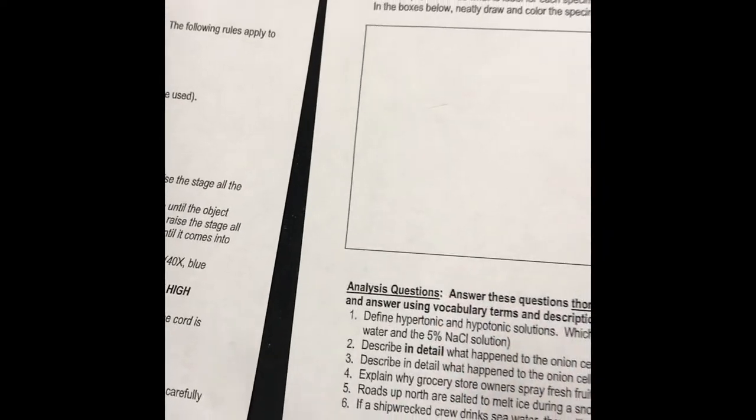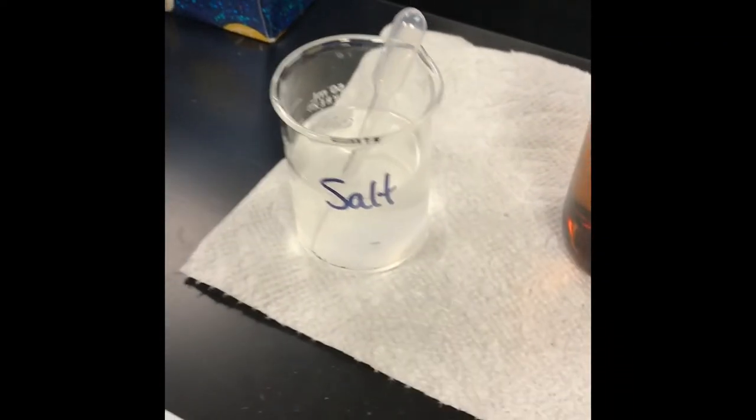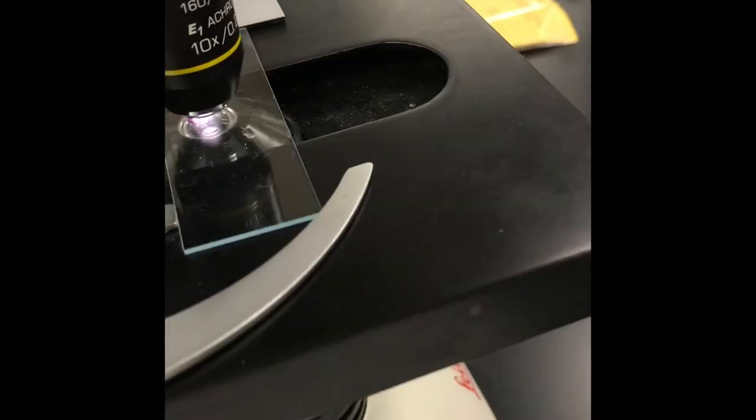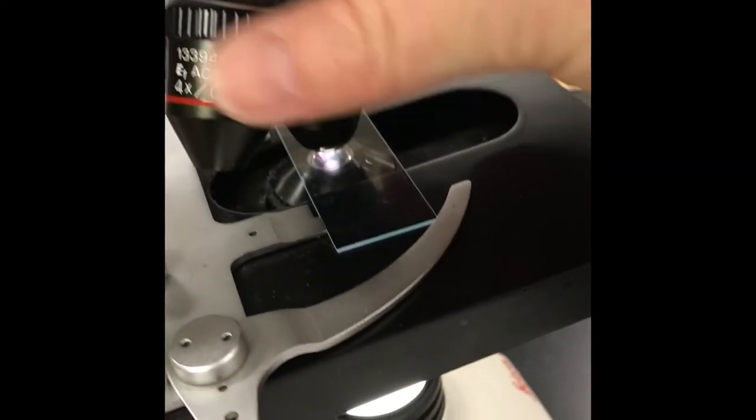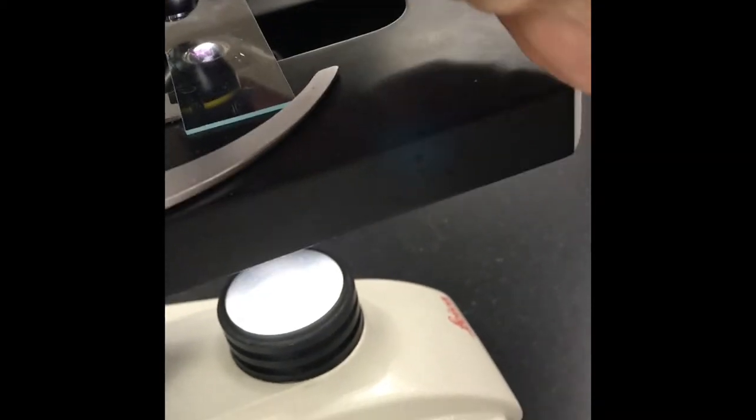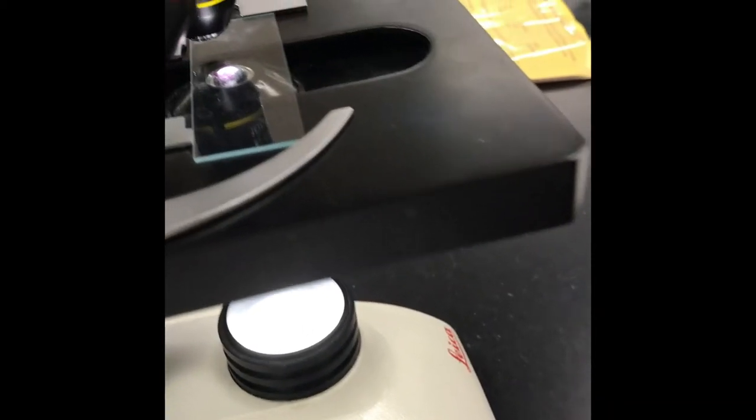Now we're ready to take some salt water and try to plasmolyze these plant cells. First, take a Kleenex and absorb some of the water from the slide to remove the distilled water. I'm going to move my objective out of the way, take a pipette with salt water, and add some salt to make them perform plasmolysis.